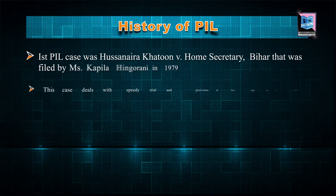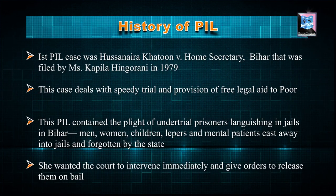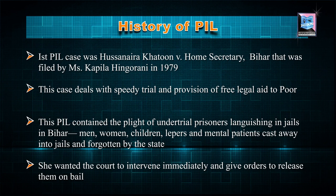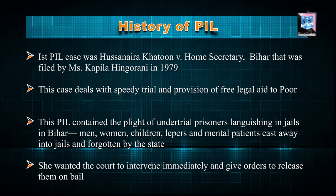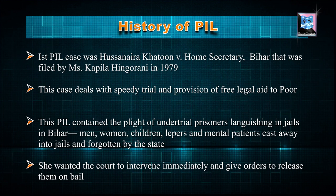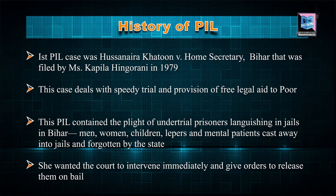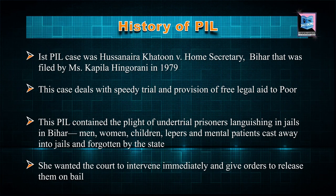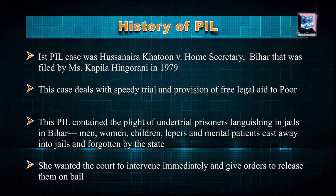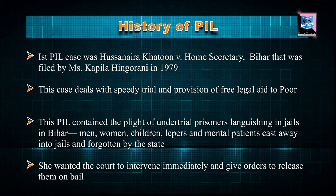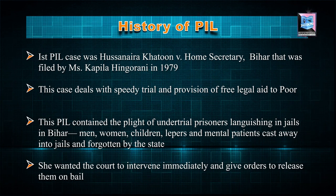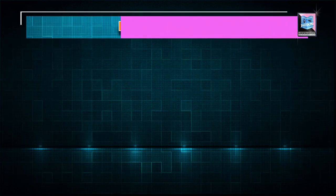When we speak about the history of public interest litigation, the first case that comes to picture is Hussainara Khatun versus Home Secretary, State of Bihar, in the year 1979. Miss Kapila Hingorani, a lawyer and social activist, dealt with the issues of under-trial prisoners who were languishing in the jails of Bihar. The jails were overcrowded and prisoners had been languishing for many years. This case is very important as it deals with the right to speedy trial and provision of legal aid to the poor.